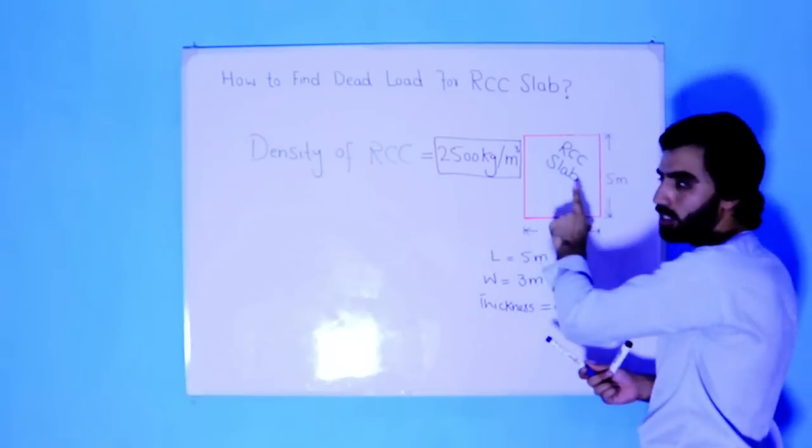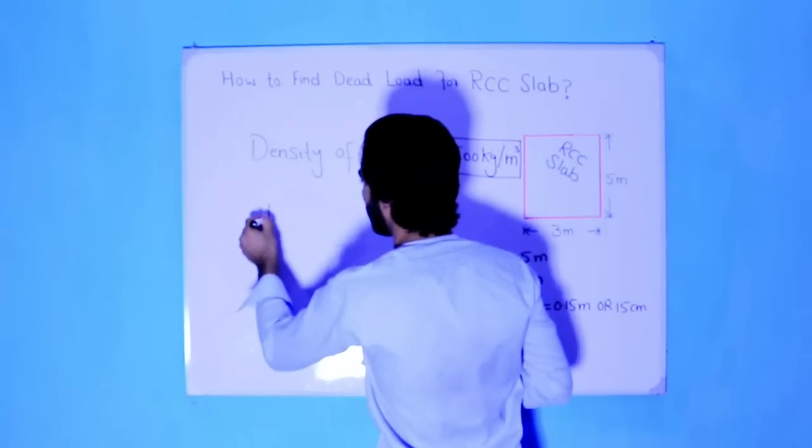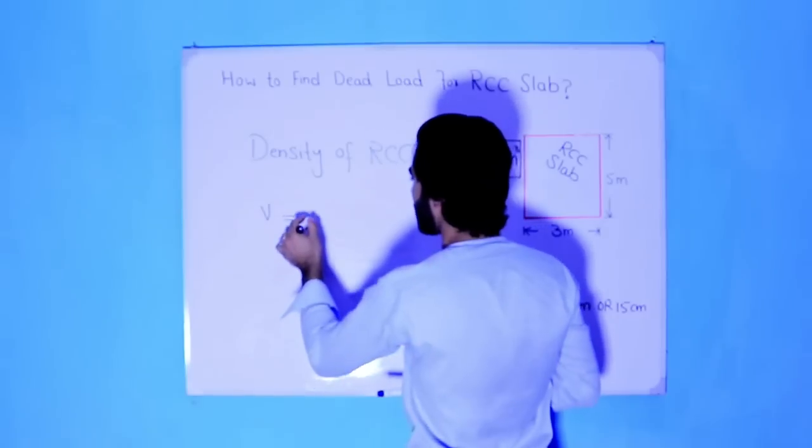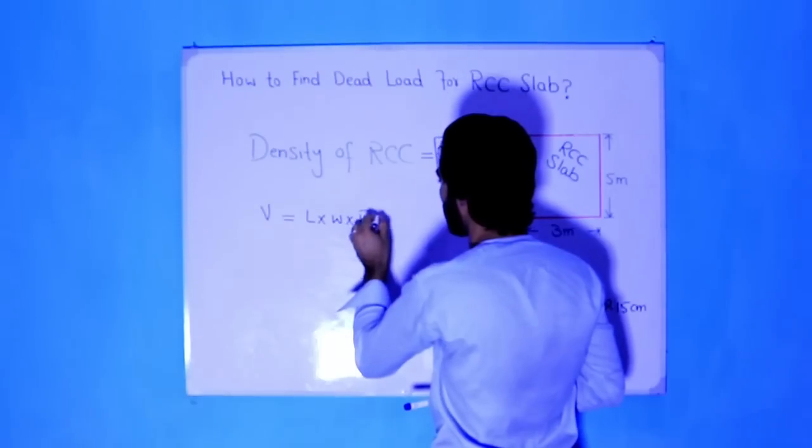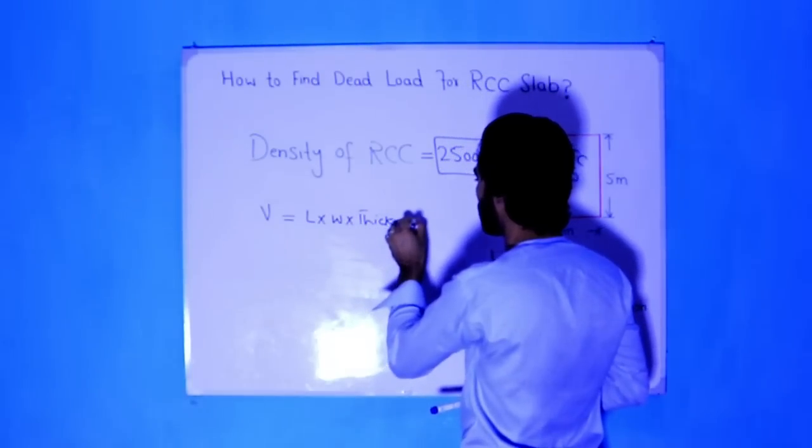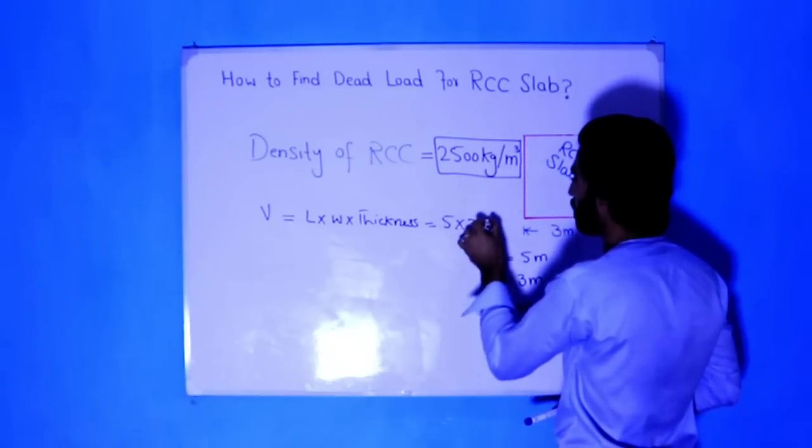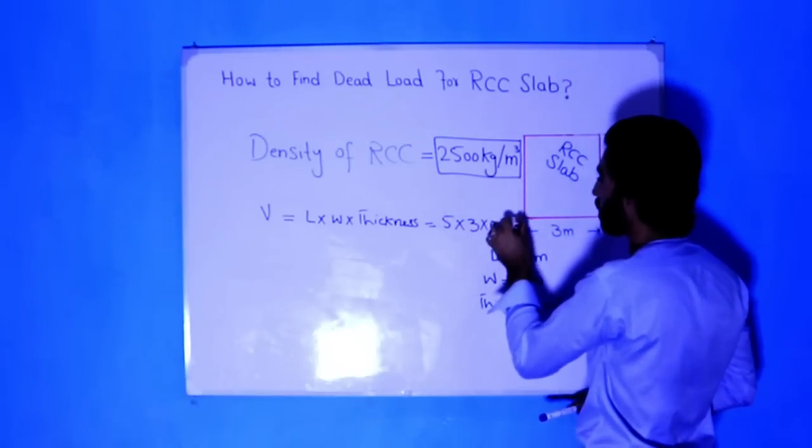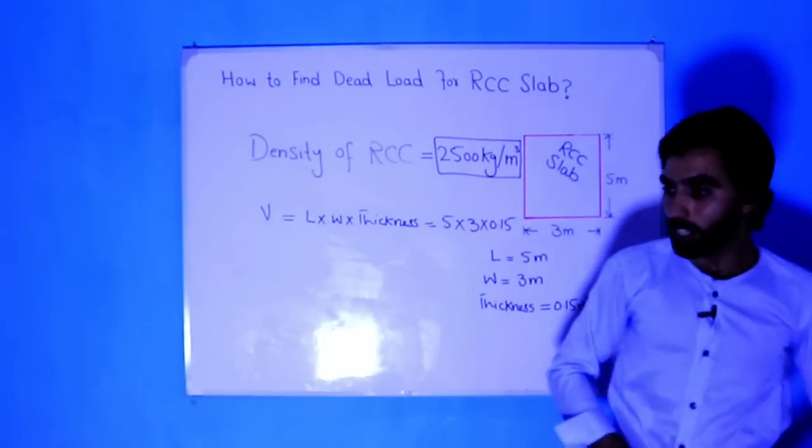Now I need to find volume of this RCC slab. Volume equals length multiply width multiply thickness, which is 5 meter multiply 3 meter multiply 0.15.